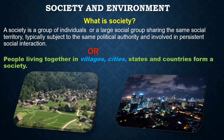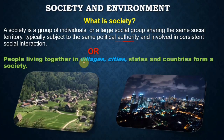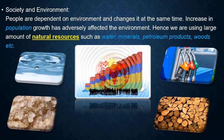Now let's discuss society and environment. Society is a group of individuals or a large social group sharing the same social territory, typically subject to the same political authority. Simply, society means people living together in villages, cities, states, and countries. People living in a society are dependent on the environment and change it at the same time. Increases in population growth have adversely affected the environment, leading to large consumption of natural resources such as water, minerals, petroleum, and wood.